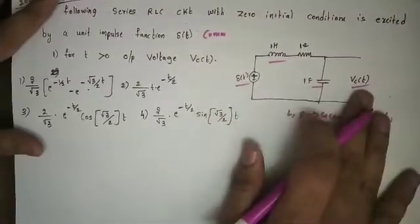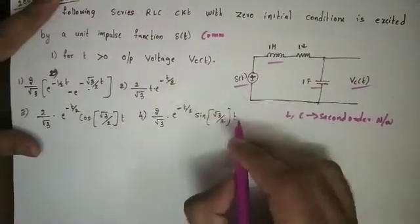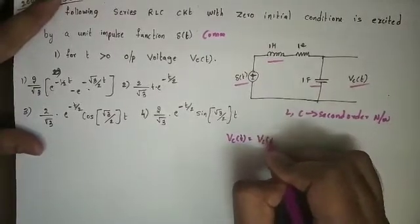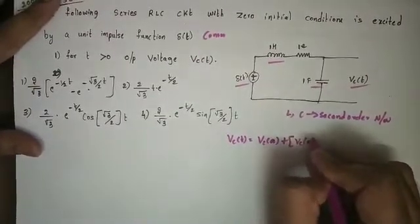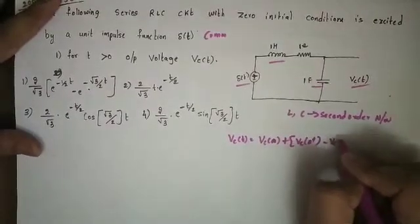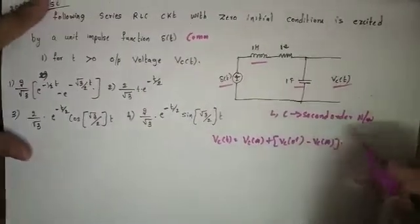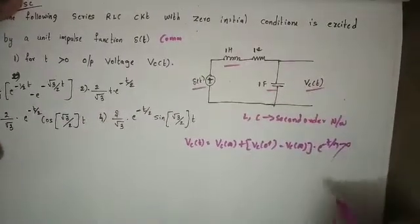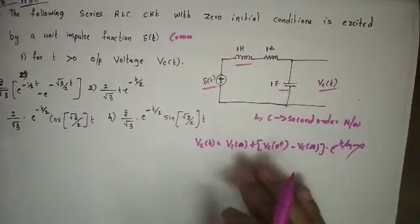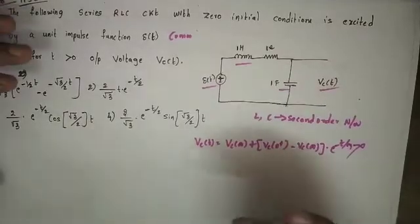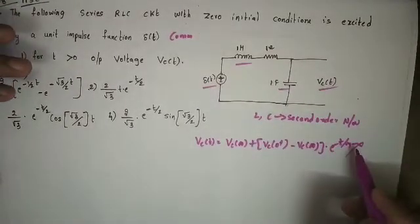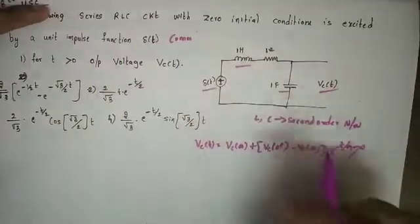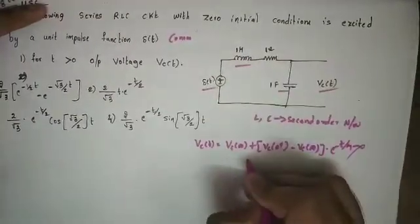Now, the capacitor voltage formula Vc = Vc(0+) + [Vc(0+) - Vc(∞)]·e^(-t/τ) is only applicable for first order networks with a finite time constant. So this formula is not applicable here. We will use the second order network scheme, which is the Laplace transform approach.